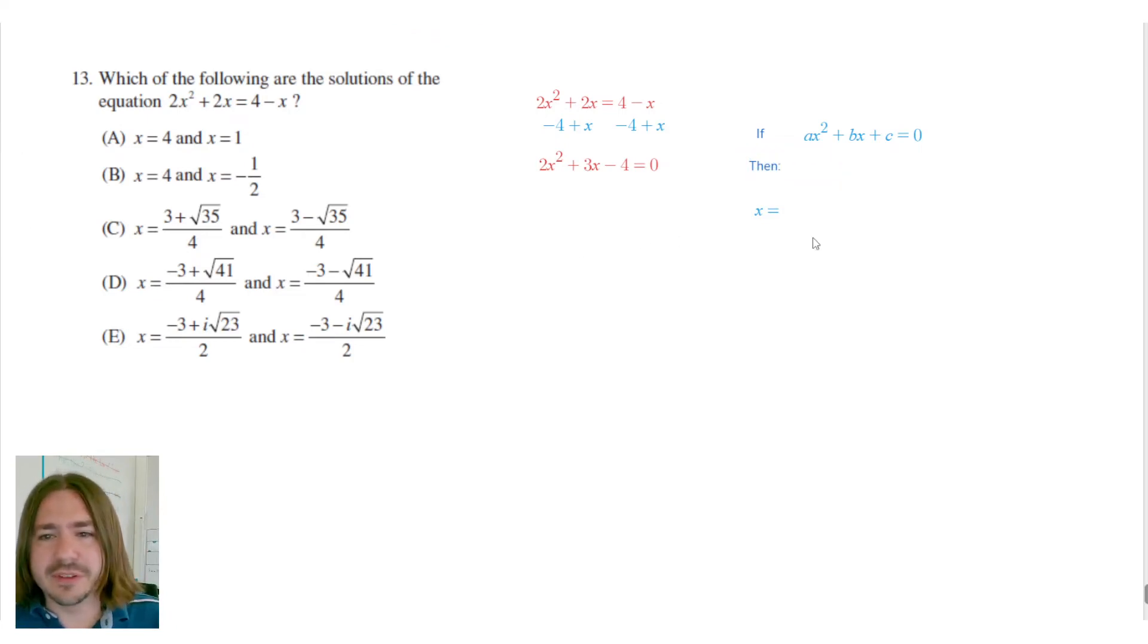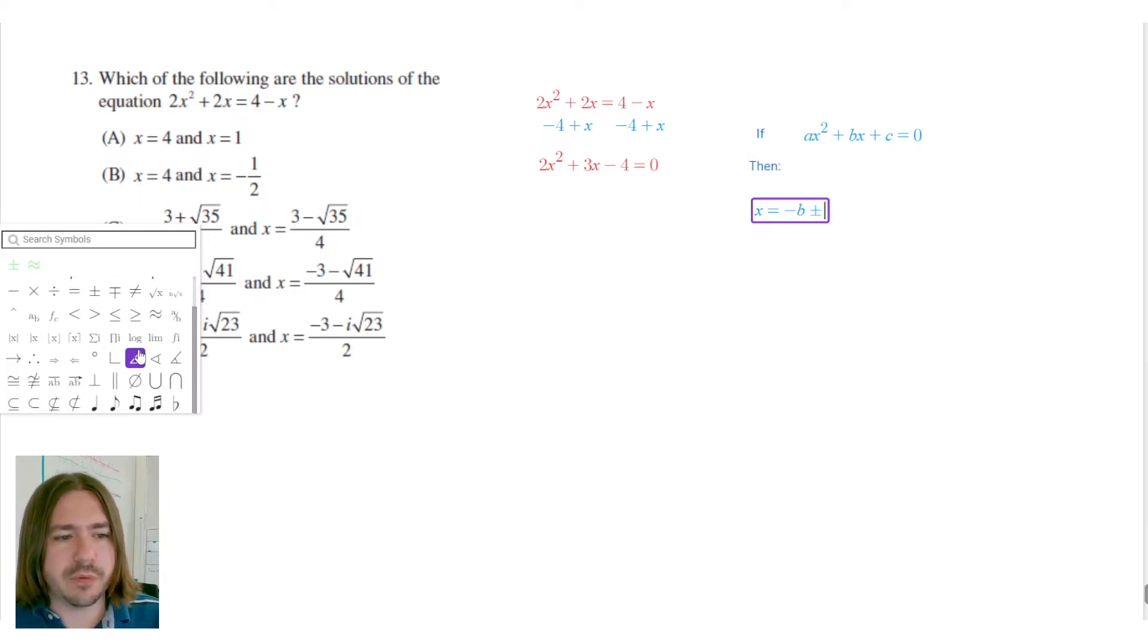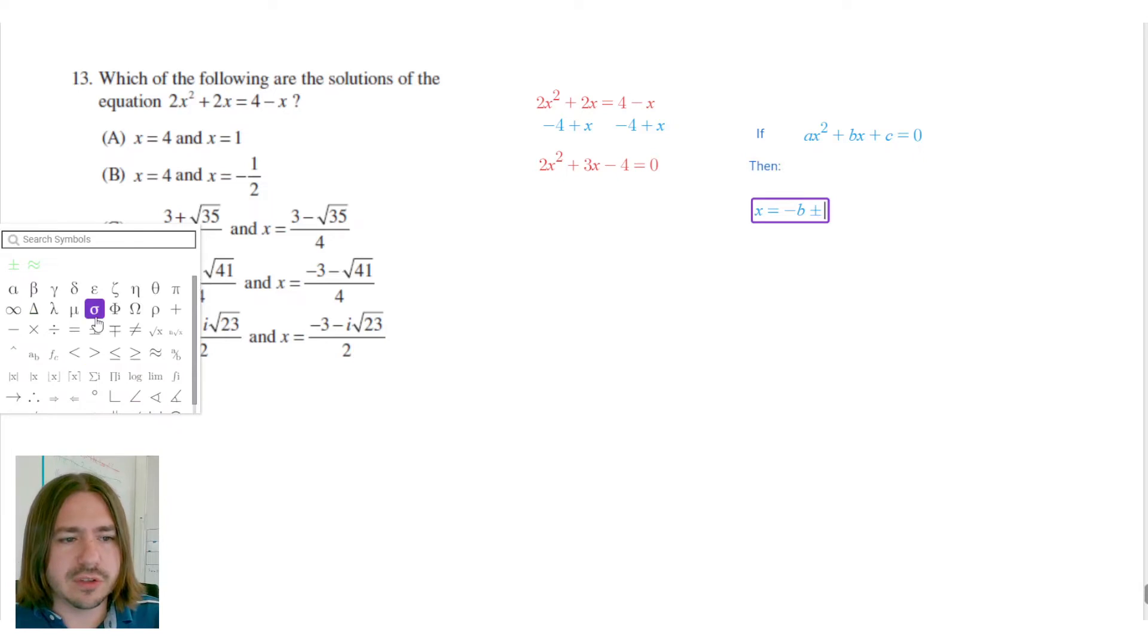So x equals negative b plus or minus, and the plus or minus there is indicating that we're going to have two solutions. So just be ready for that. One of the solutions is going to use plus, and the other one is going to use minus.